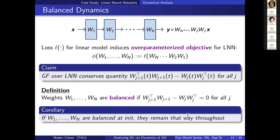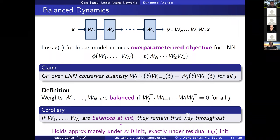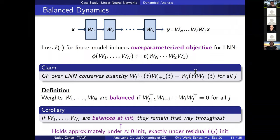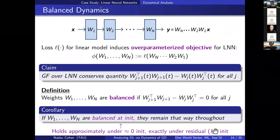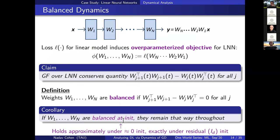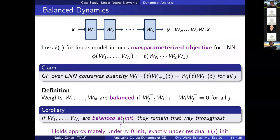Balancedness at initialization holds approximately or exactly under standard initialization schemes. If you initialize close to zero, the weights are approximately balanced and stay that way. If you use identity initialization (a residual scheme), the weights are exactly balanced and stay that way. Moving forward, we assume the weights are balanced for gradient flow, and in translations to gradient descent we will relax this to approximate balancedness.